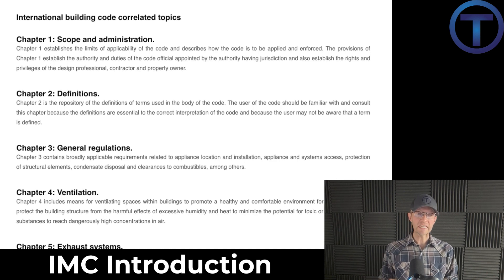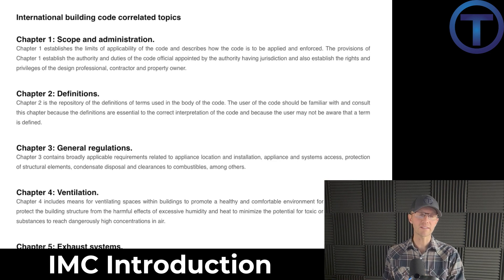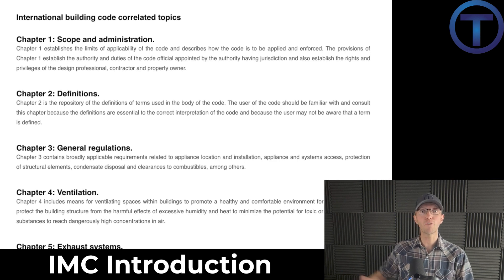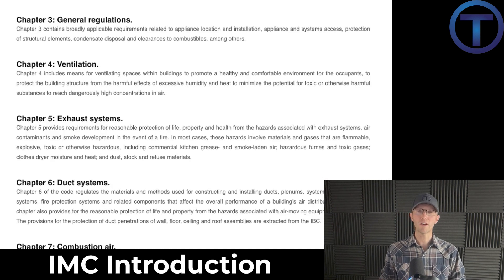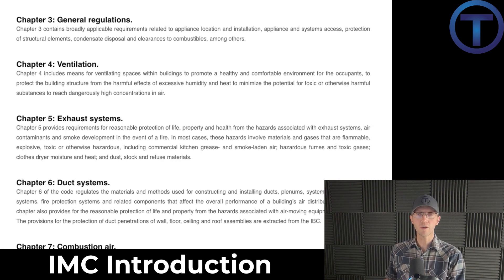Chapter two is on definitions, and we will look at a number of definitions. Just like the International Plumbing Code, it spells out what all these words mean to help us understand the rest of the book. That's why they put definitions in the front — you should understand what these words mean before you read the rest of this book, and that's what we'll be focusing on. Chapter three is on general regulations, having to do with the overall construction process and installing mechanical systems, and we will focus on that chapter.